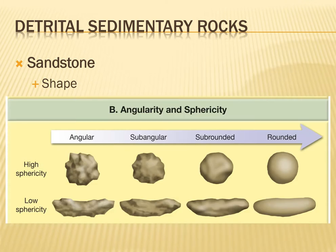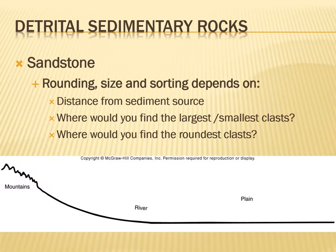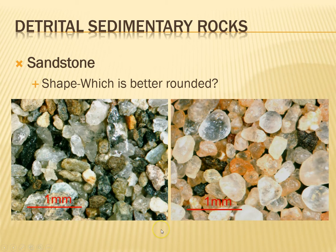We can also look at the shape of the clast. Angularity is the degree to which clasts have smooth surfaces — the more round it is, the less angular it is. You can also look at sphericity: how close it is to a sphere shape. Looking at these pictures, the one on the right is a little more rounded. These are all quartz grains — even the orange one, which is actually covered in hematite. Notice we've got lots of quartz and just a little bit of hematite, which will come back when we talk about lithification processes.